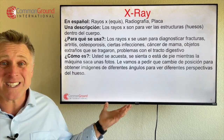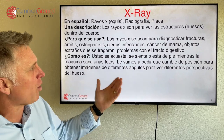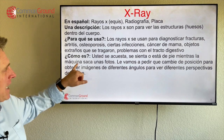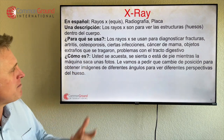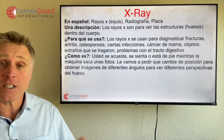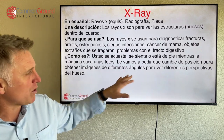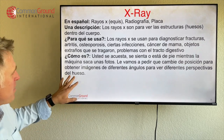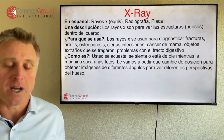¿Cómo es? What's it like? Usted se acuesta, you lie down, se sienta, o está de pie — sit or are standing — mientras la máquina saca unas fotos, while the machine takes images. Le vamos a pedir que cambie de posición, we'll ask you to change position, para obtener imágenes de diferentes ángulos, to get images from different angles, para ver diferentes perspectivas del hueso, to see different perspectives on the bone.